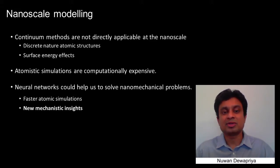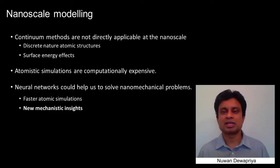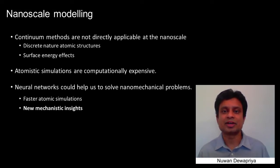We can use atomistic simulations to study the nanostructures, but those simulations are computationally expensive. Machine learning tools such as neural networks can help us in two ways. First, by making atomistic simulations computationally more affordable — for example, developing faster neural network based interatomic potentials.